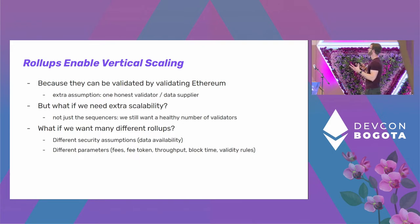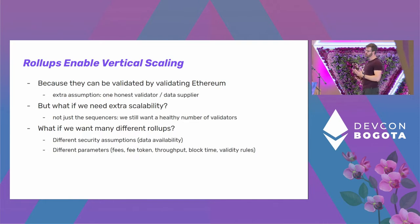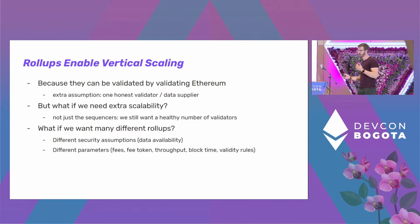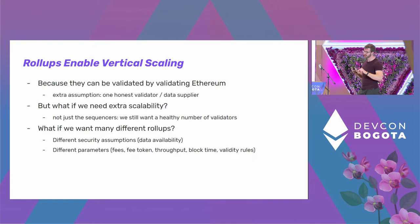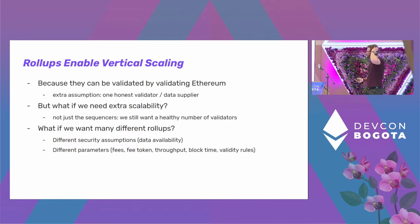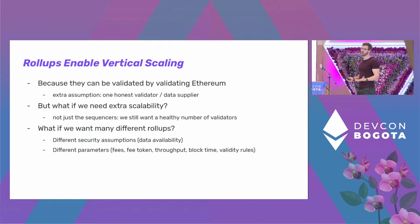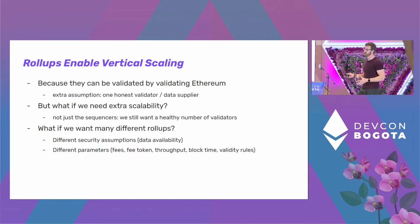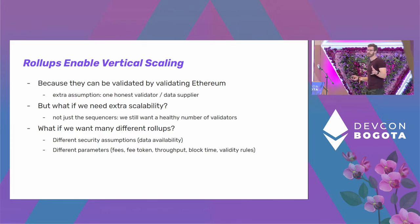The question is: we can scale vertically and probably scale Ethereum 10 times, maybe 100 times if we push some buttons like scaling the database. But what if we need extra scalability? There are multiple reasons we might want that. For one, we could require a data center for L2 sequencers, but we want to have a healthy validator network, and not everybody can get a data center.